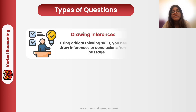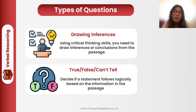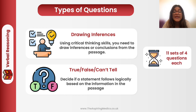There are two types of questions. First is drawing inferences, where you use critical thinking skills to draw conclusions from the passage. Common questions include: what is the theme of the passage? What did the author mean? Second, we have true/false/can't tell questions where you decide if a statement follows logically based on the information in the passage alone. It's really important not to use your own knowledge in any UCAT section. You get 11 sets of four questions each — 11 passages with four questions on each.